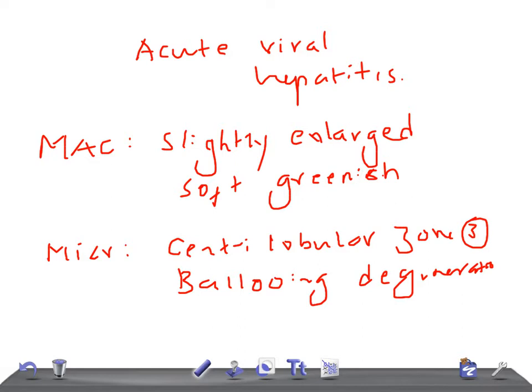Zone 3, the centrilobular zone, shows ballooning degeneration. In ballooning degeneration, the hepatocytes appear swollen and have granular cytoplasm. The second feature of acute viral hepatitis on microscopic appearance is the presence of what we call Councilman bodies.